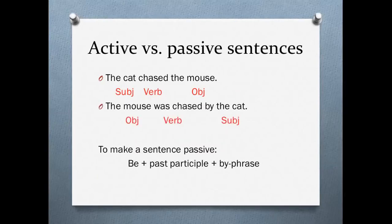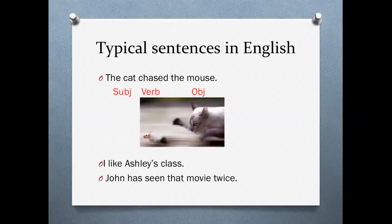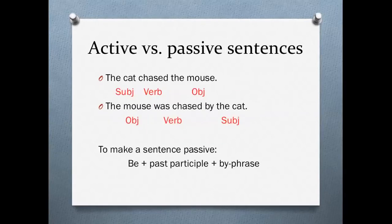Now let's talk about active versus passive sentences. Active sentences are like the sentences I showed you before — all of those are active sentences. The subject does the verb to the object. So we have: the cat chased the mouse. A passive sentence would be like this: the mouse was chased by the cat. In a passive sentence, we change things a little bit. The object becomes the subject, and the subject becomes the object. The meaning is the same — there is no difference in meaning between these two sentences. We've just changed the order of the words.